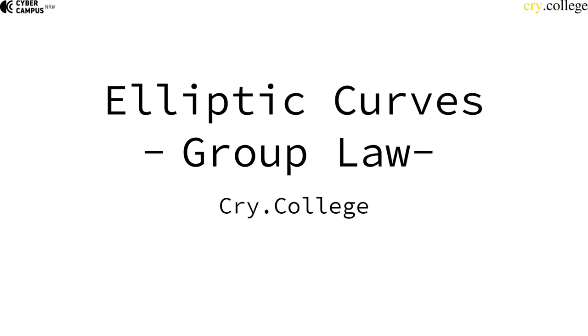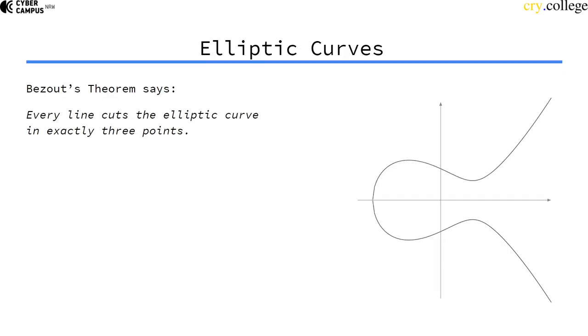So let's look at a possible group law for elliptic curves. There's a famous theorem that says every line cuts through the elliptic curve in exactly three points. This is somewhat of a simplification of this theorem, but the exact theorem is not important to us here.